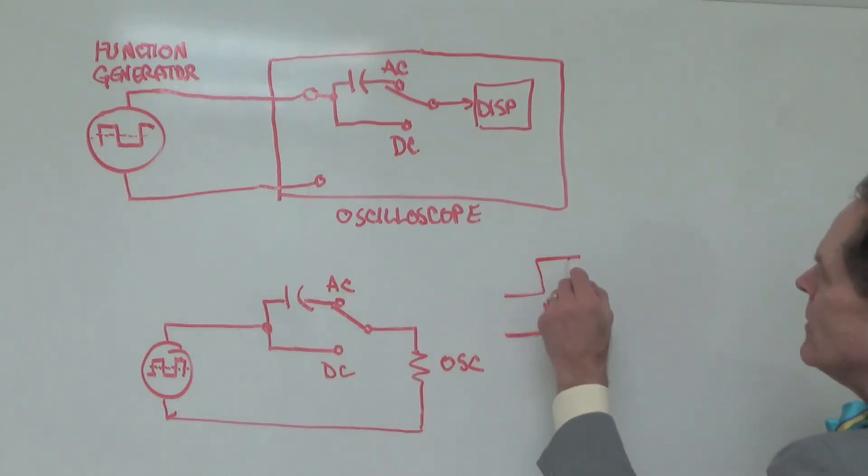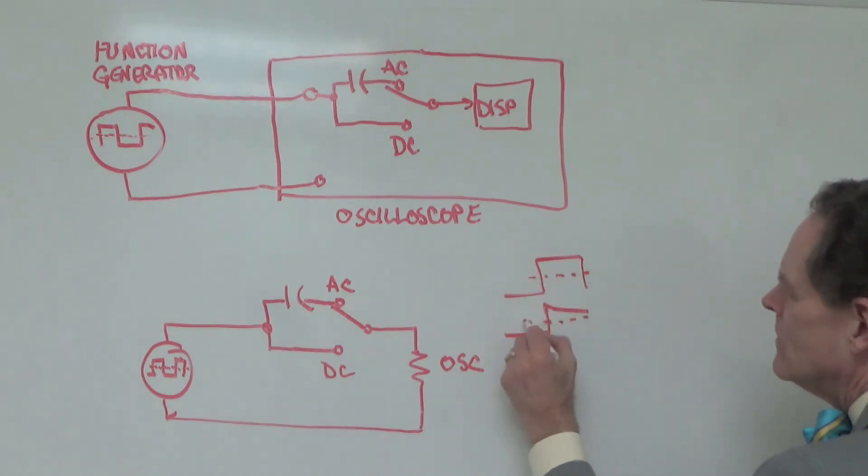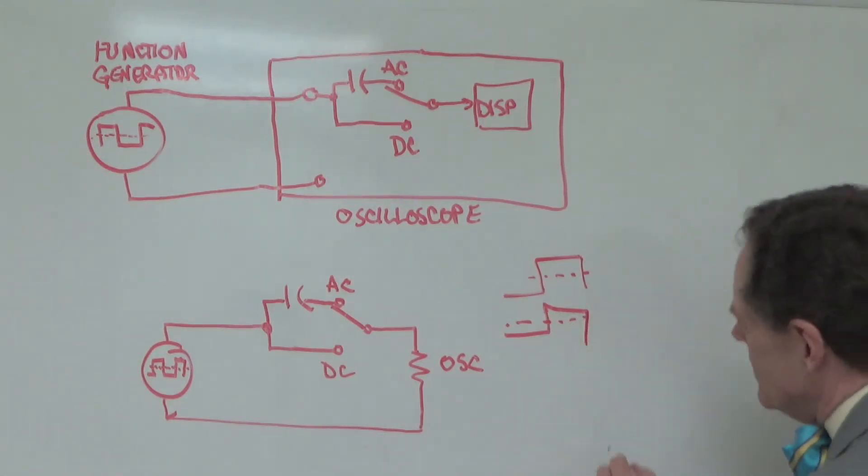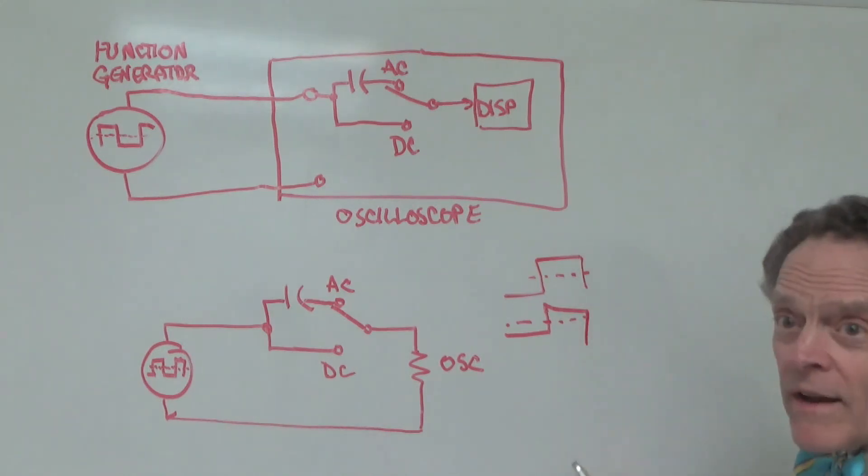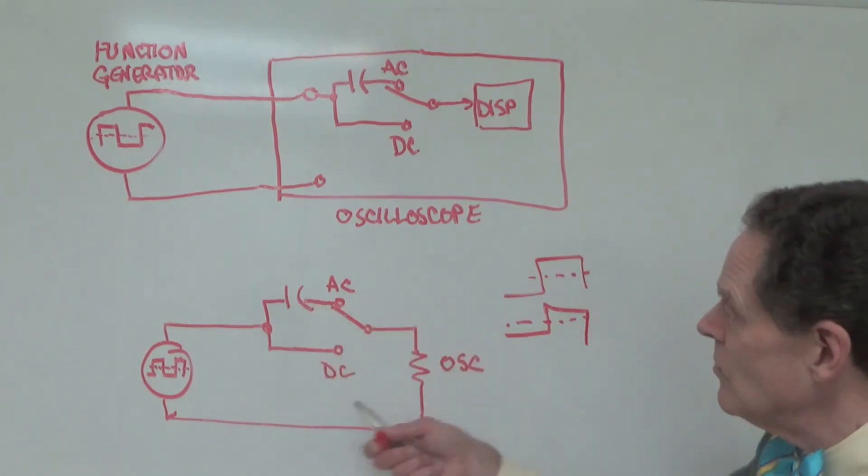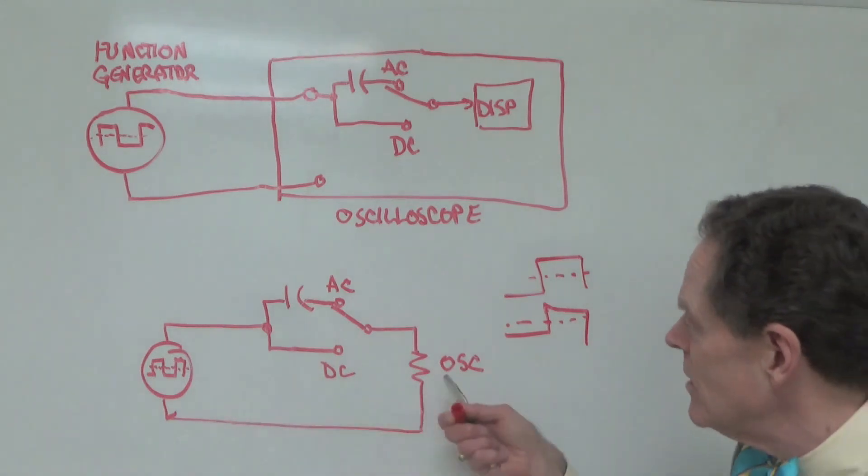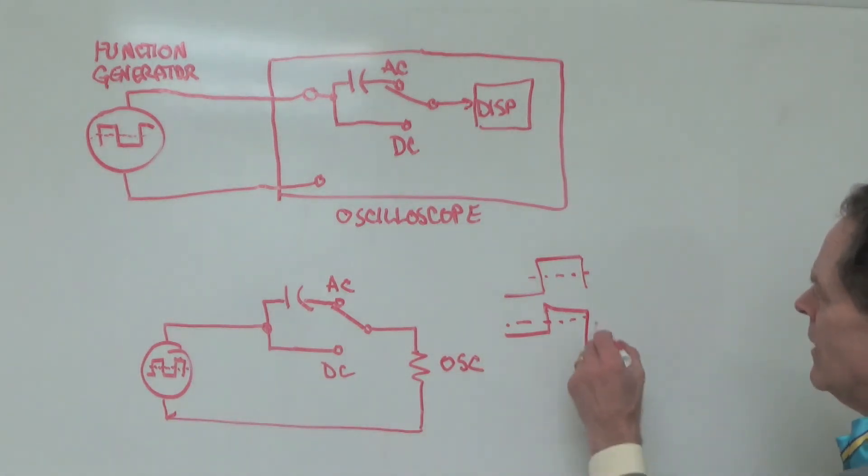Well, the output drops back to a negative value. If this is, if this is zero here. This would be zero. Goes back to some negative value. And again, the capacitor acts like a short. And so, the voltage across the oscilloscope follows it right down because it's a short. And so, whatever is happening with the voltage over here is shown right here. And, but then the same thing happens. The capacitor starts to charge up in the other direction. And we get something that looks like this.